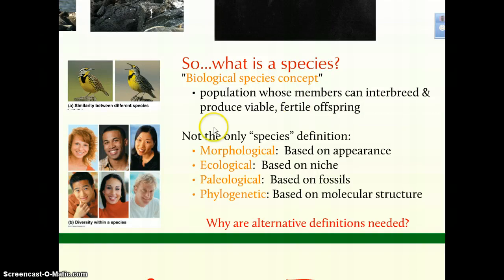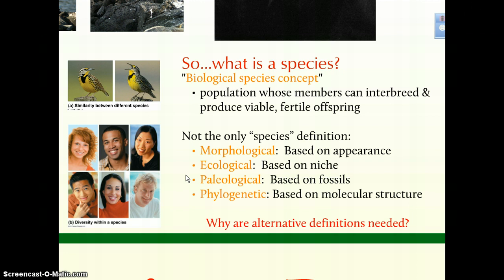Morphological definitions are based on physical features — tied to the paleological definition. If we look at features of organisms, we can see how they are physically distinct. You can look at Archaeopteryx and recognize that it has features of reptiles but also possesses features of birds — a transitional species between reptiles and birds that is distinct from both groups.